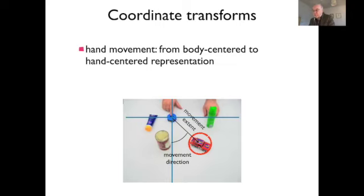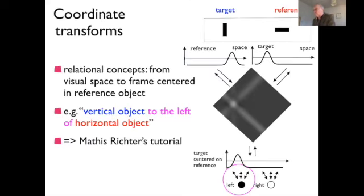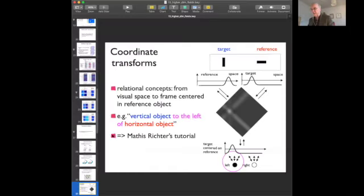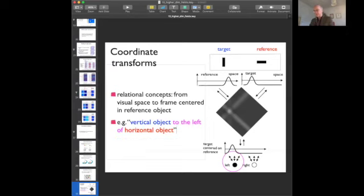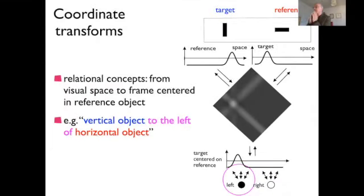The gain field property comes from the dependence of receptive field size on a third variable — gaze — and I will explain how that third variable enters. Coordinate transforms also appear in more abstract ways: for instance, if you want to say 'the vertical object is to the left of the horizontal object,' you need a neural operator for the relational concept 'left.' This might be a node with excitatory connectivity to the left of the visual array, and 'right of' with excitatory connectivity to the right.